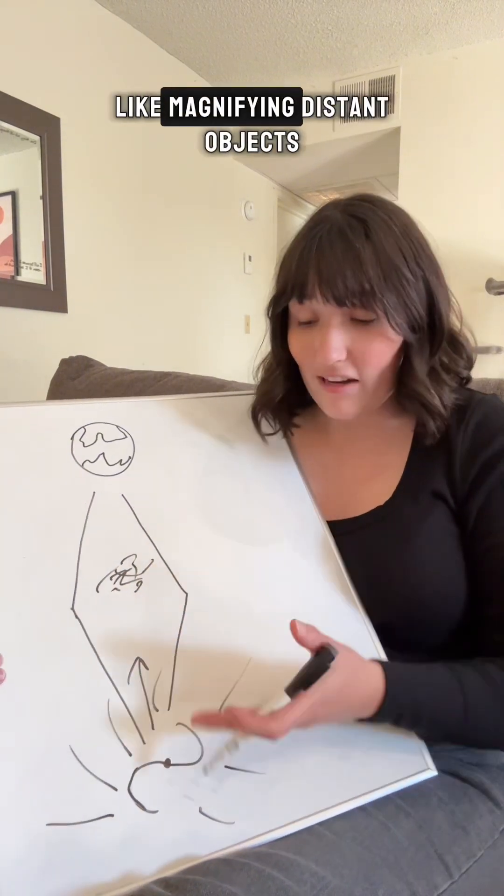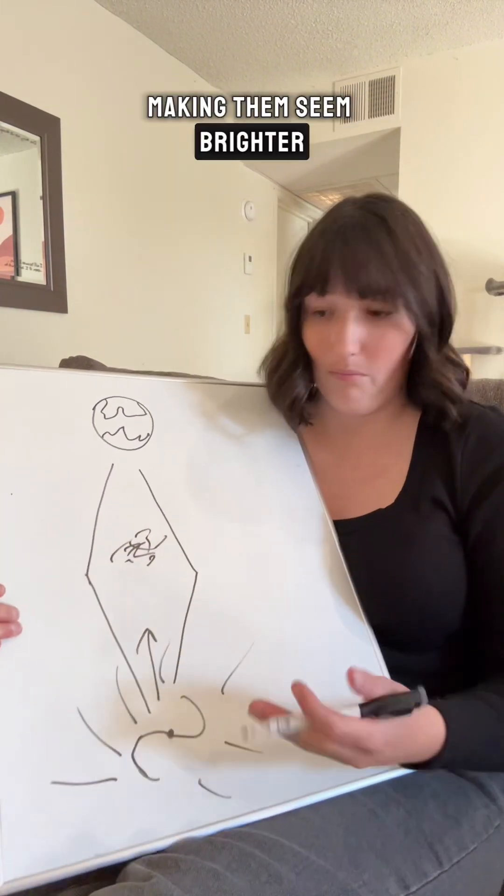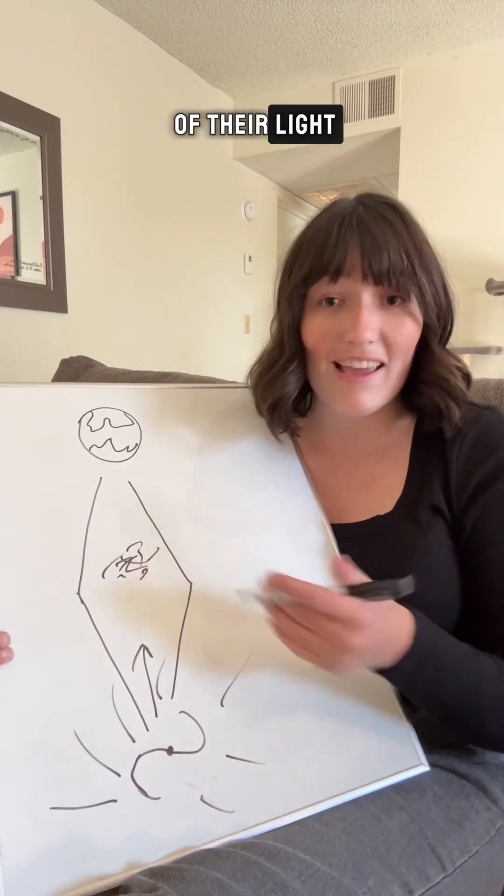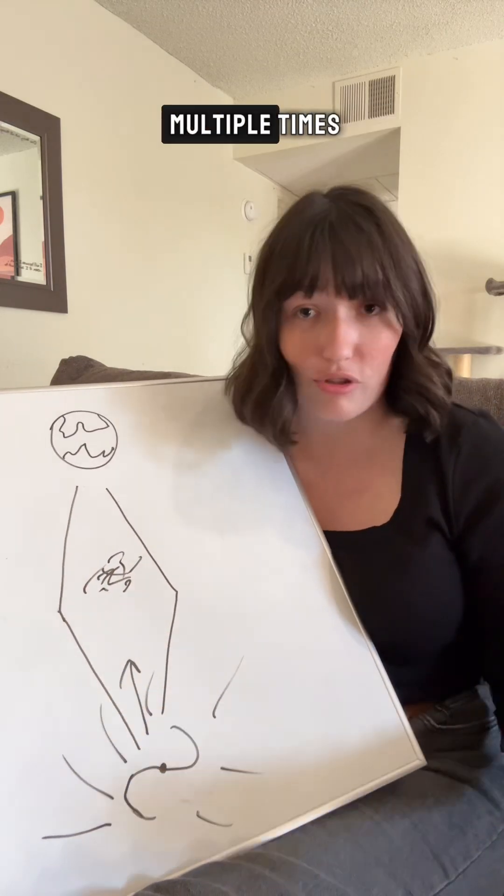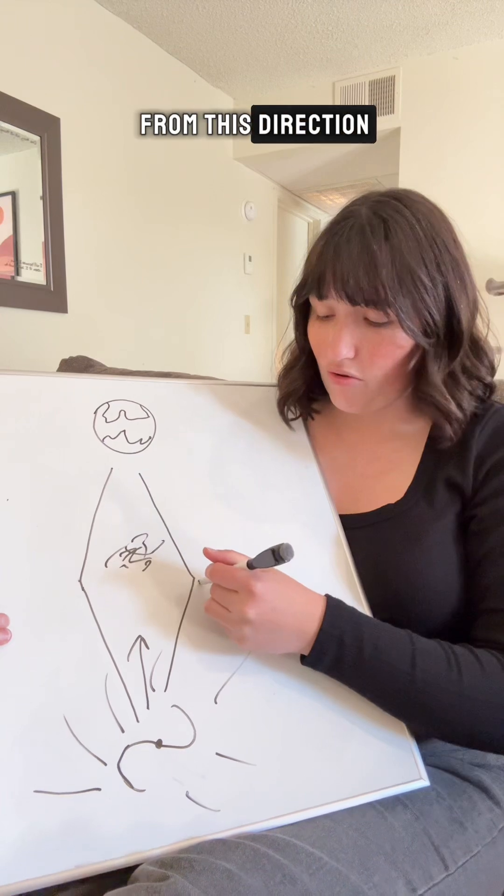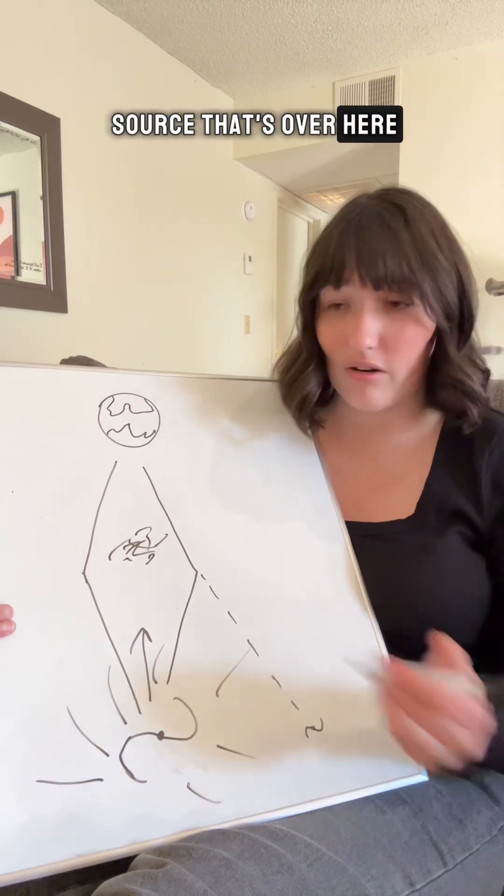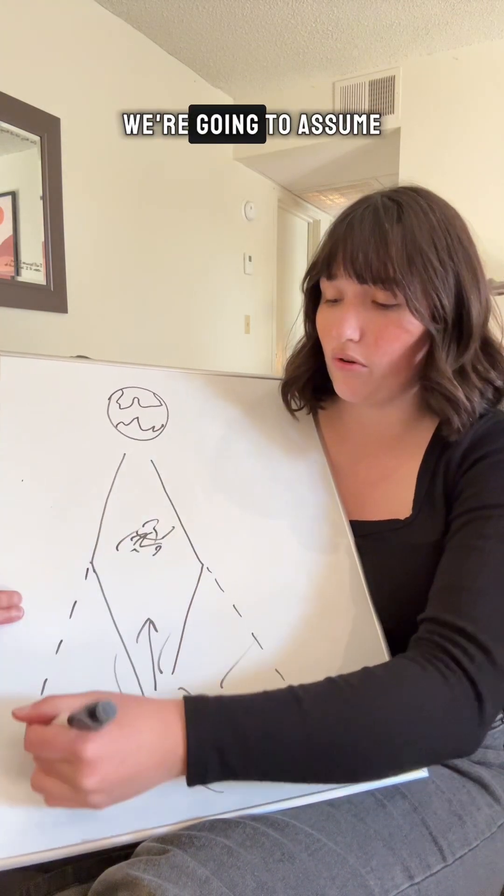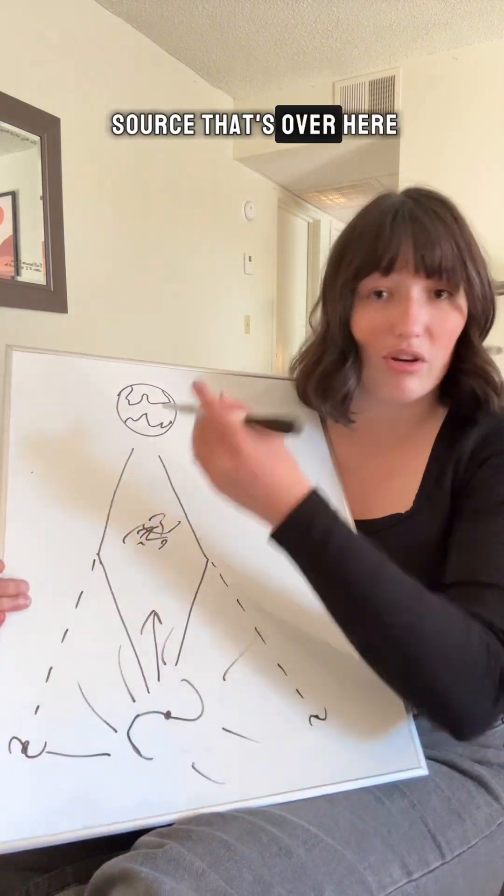This does cool things like magnifying distant objects, making them seem brighter because we're getting more of their light, and making them appear multiple times. Because imagine from Earth, if we look at the light that's coming from this direction, we're going to assume it's coming from a source that's over here. And the light that's coming from this direction, we're going to assume it's coming from a source that's over here.